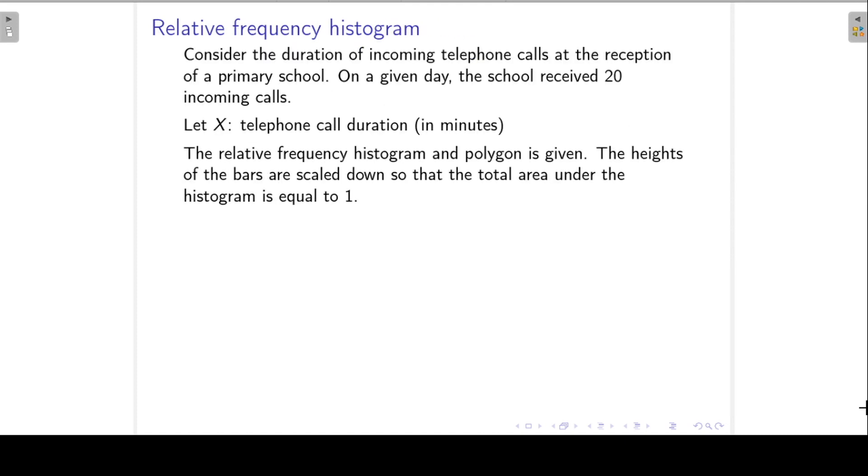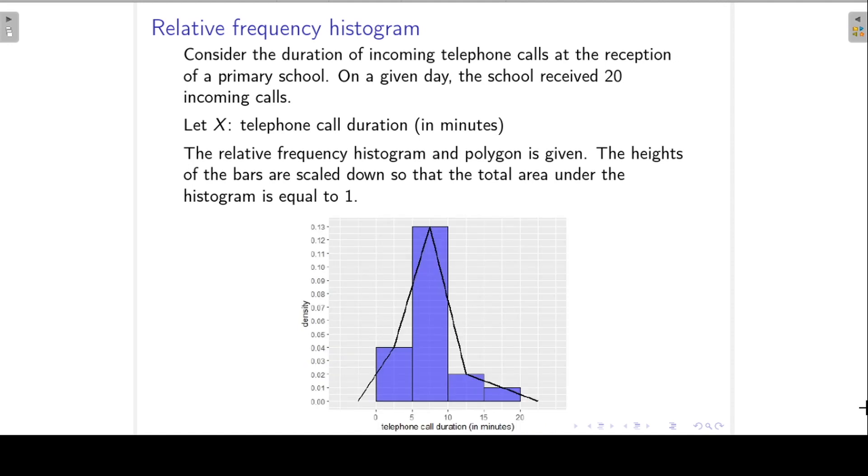Now, let's look at this example. Consider the duration of incoming telephone calls at the reception of a primary school. On a given day, the school received 20 incoming calls, and we define our random variable x as the telephone call duration in minutes. We can now set up the relative frequency histogram and polygon for this example. The heights of the bars are scaled down so that the total area under the histogram is equal to one.